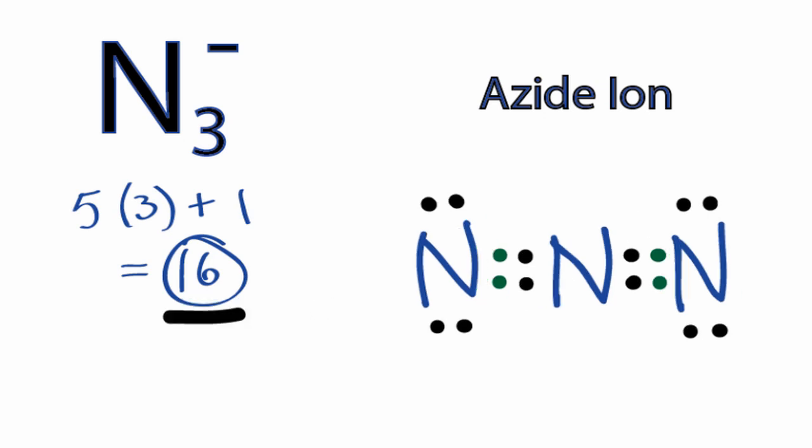So that's the Lewis structure for N3 minus the azide ion. We've used all 16 valence electrons. All of the atoms have octets, so we're done.